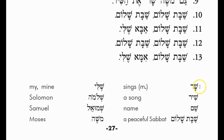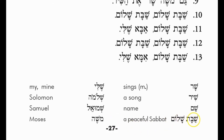Shar is the masculine 'sings'; Shir is the noun 'song'; Shem means 'name' — hence HaShem. HaShem means 'the name.' Shabbat Shalom means the peace of Shabbat. Shabbat — Sabbath. Okay.